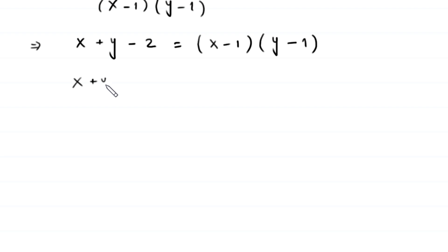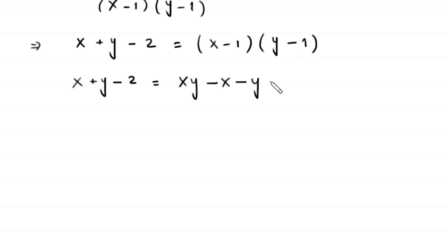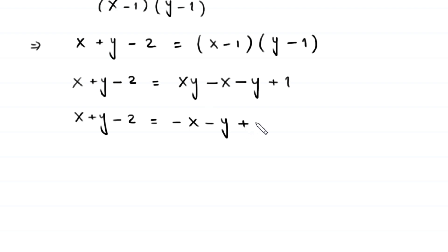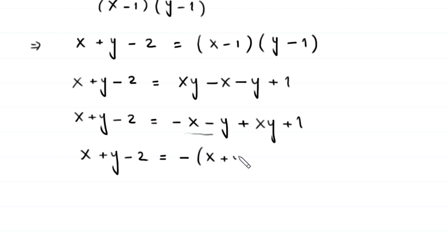We expand the right side: (x minus 1)(y minus 1) equals xy minus x minus y plus 1. Rearranging, x plus y minus 2 equals negative x minus y plus xy plus 1. We can factor out a negative sign from the first two terms on the right, giving x plus y minus 2 equals negative(x plus y) plus xy plus 1.